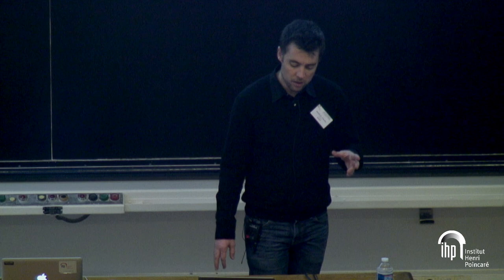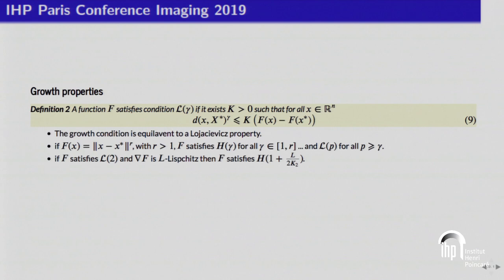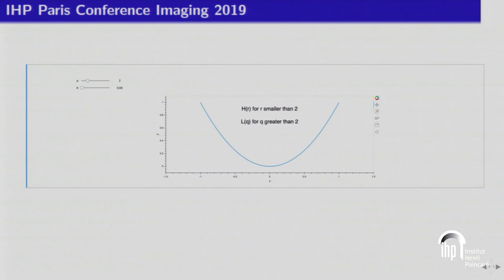The second condition is L(gamma): we say f satisfies L(gamma) if the function is lower bounded near the set of minimizers by the distance to the set of minimizers raised to the power gamma. This ensures the function grows sufficiently fast — at least faster than x^gamma. We use the letter L because in the convex setting, this is equivalent to a Łojasiewicz property. If f(x) = |x - x*|^r with r > 1, f satisfies H(gamma) for any gamma < r, and L(p) for any p > gamma.